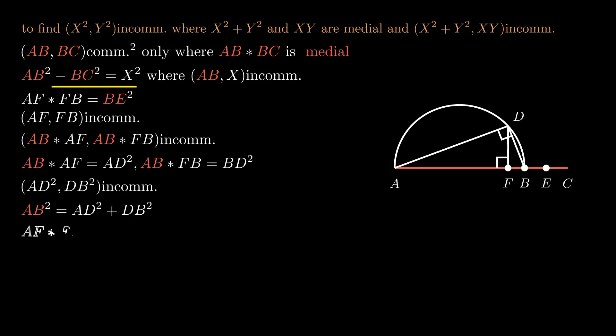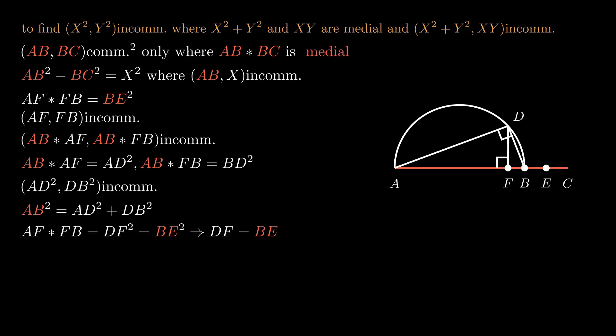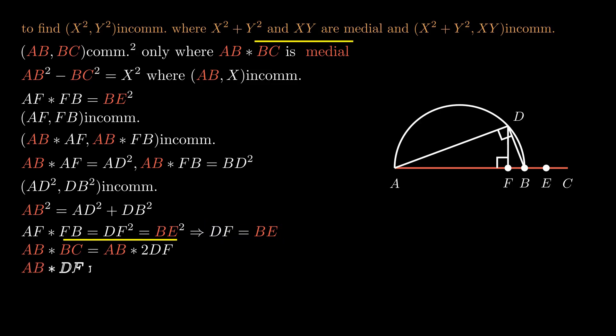By the same lemma as before, af times fb is equal to df squared, so df squared is equal to be squared, so df equals be. bc equals 2be which is equal to 2df, so ab times bc is equal to 2ab times df. ab times bc is medial by assumption, so ab times df is also medial.